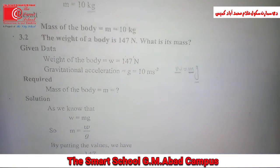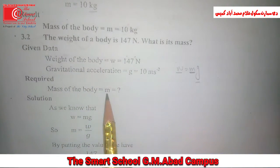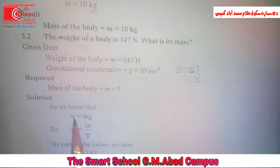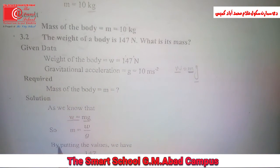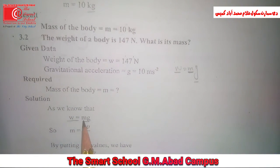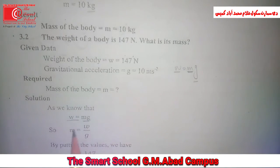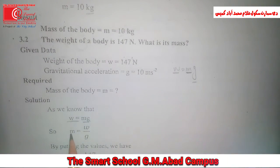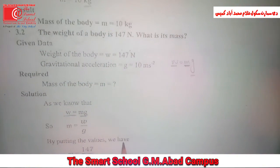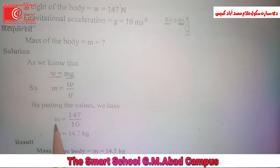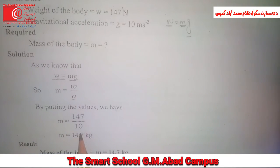Required: mass. So we will write the formula that w equals mg. Here w is given and g we know. We need to rearrange this formula. m is equal to w by g. By putting the values we have...